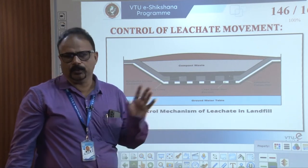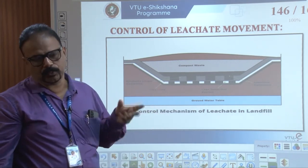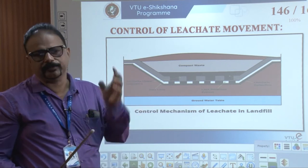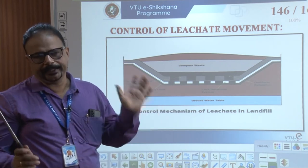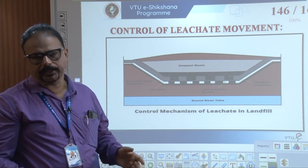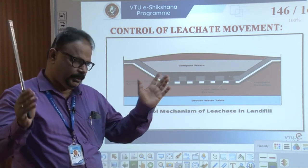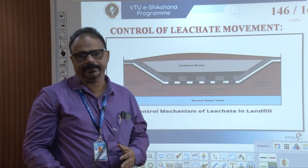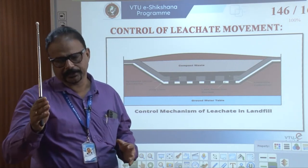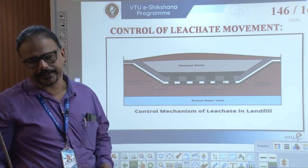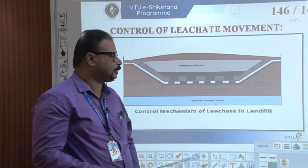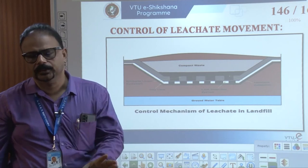Gas control is of two types: one is the well type — taking the gas out through vented pipes — and the other is the barrier type — covering below the solid waste with two layers: primary clay layer, geomembrane layer, secondary clay layer, and secondary geomembrane. That is how we control gas by barriers and well type.